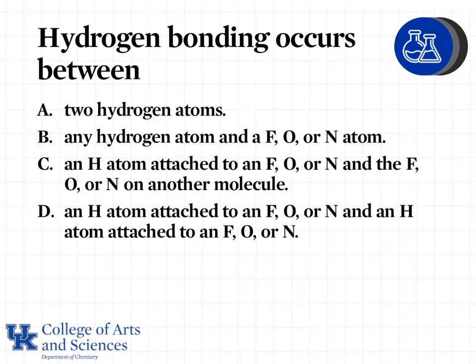A question here to refresh your memory about hydrogen bonding: where do we see hydrogen bonding occur? Which one best meets the definition? Option C is actually our best answer because hydrogen bonding occurs between an H atom attached to fluorine, oxygen, or nitrogen on one molecule, and the fluorine, oxygen, or nitrogen on another molecule.